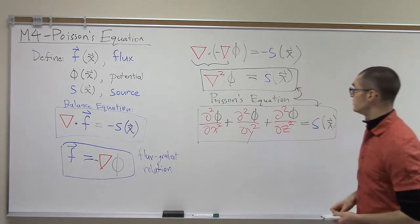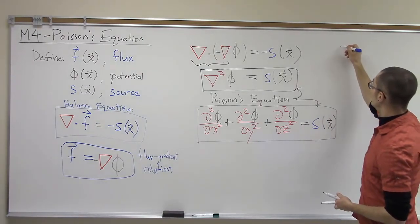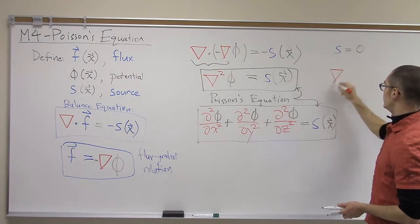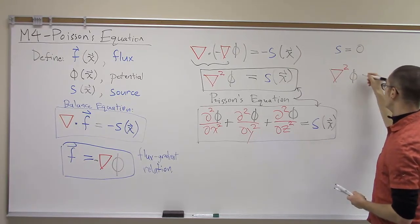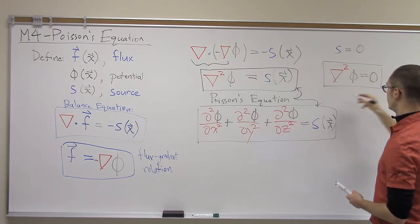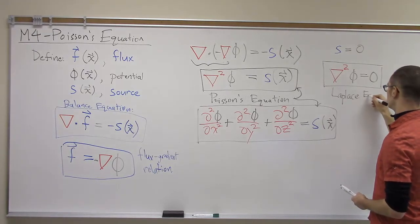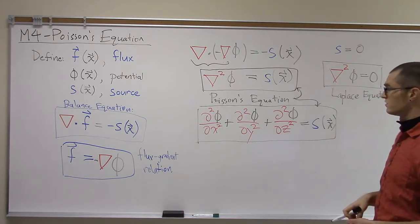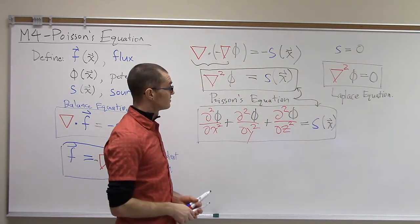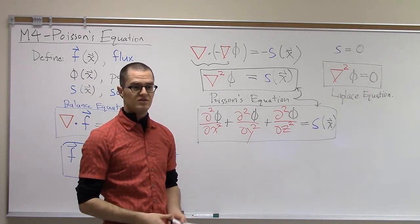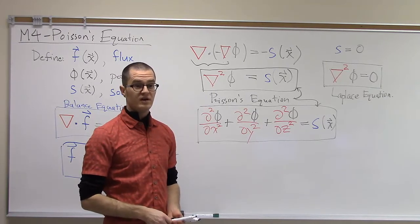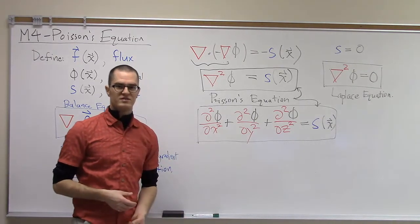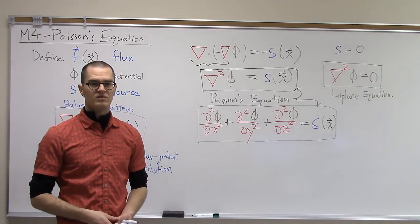A special case of the Poisson equation is when the source term is equal to zero. So if s is equal to zero everywhere, then we can write nabla squared phi is equal to zero. We call that the Laplace equation, and that's in fact why we call this operator the Laplacian, because it's associated with this equation. You'll see this equation in our studies of gravitation and magnetics, and also in hydrogeology, where it typically describes the potential flow of groundwater in the subsurface. Okay, so that concludes this first part defining the Poisson equation. The second part of this video will look at the boundary conditions.